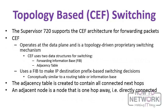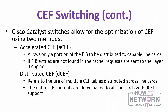The Supervisor 720 supports CEF architecture for forwarding packets. CEF operates at the data plane and is a topology-driven proprietary switching mechanism. It uses two data structures for switching: the forwarding information base (FIB) and the adjacency table. It uses the FIB to make IP destination prefix-based switching decisions. The adjacency table contains all connected next hops, where an adjacent node is one that is directly connected. Catalyst switches allow for optimization of CEF using accelerated CEF, which distributes a portion of the FIB to capable line cards, and distributed CEF, which distributes full CEF tables across all line cards.